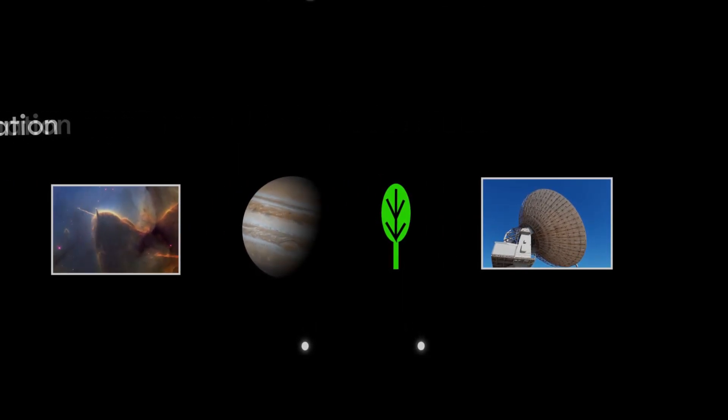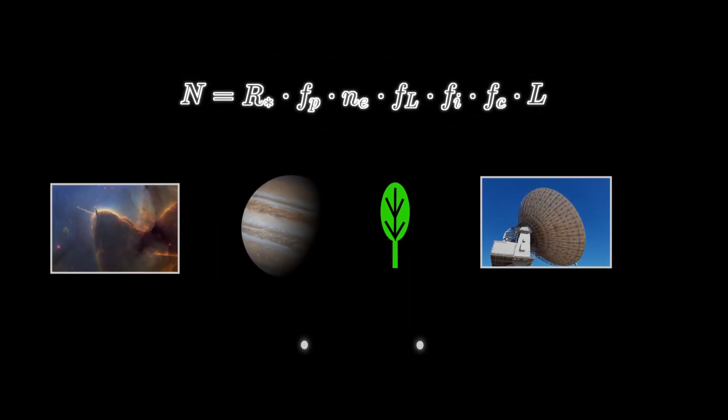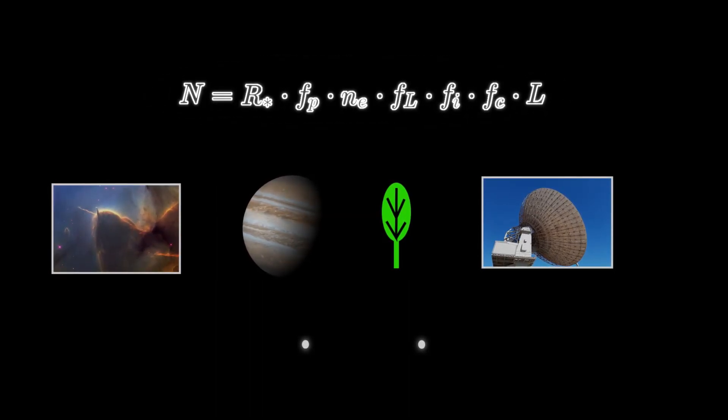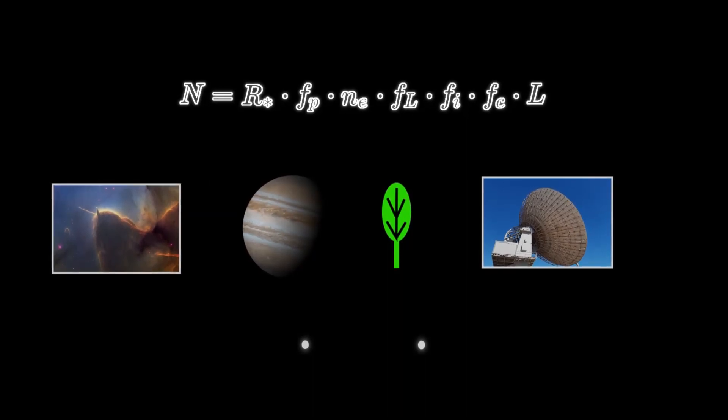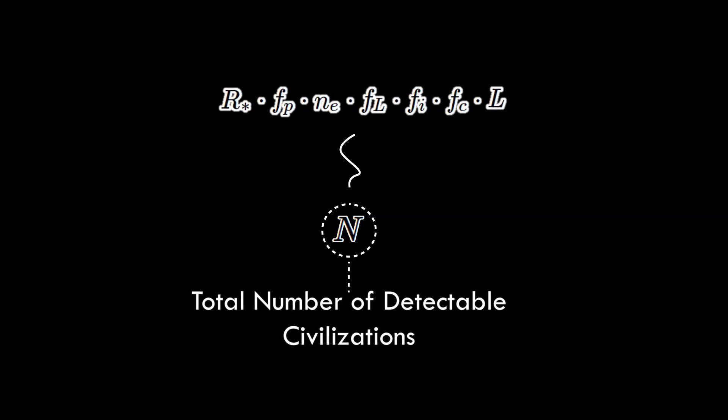This is the Drake Equation. It was a formula created by scientist Frank Drake in 1961 that had a goal to find a rough estimate of the total number of intelligent and detectable civilizations in the Milky Way galaxy. It has seven different factors which together approximate the number of notable extraterrestrial civilizations in our galaxy.